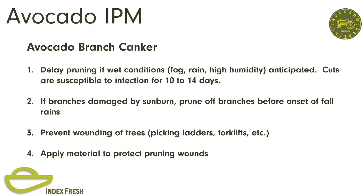Branch canker: don't prune during wet conditions—fog, rain, high humidity. Cuts are susceptible for 10 to 14 days. If the branches are damaged by sunburn, which many of us have now due to the heat back in July, Keith Eskalen said we need to prune those before the onset of fall rains. Prevent wounding of the trees from picking ladders, forklifts, and sunburn. There is a material you can apply to the wounds—I'm not going to mention it because there's still debate, but it looks promising.